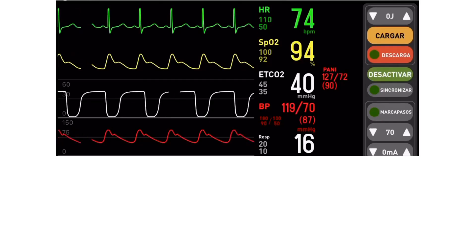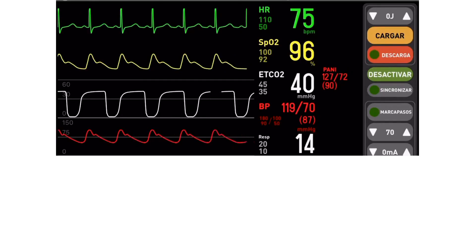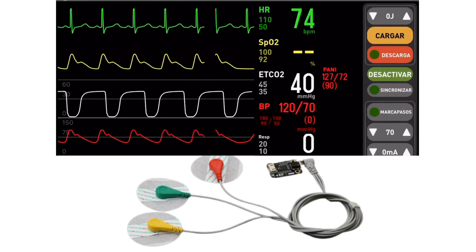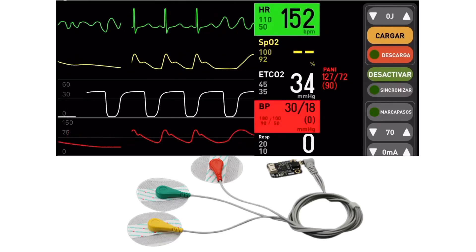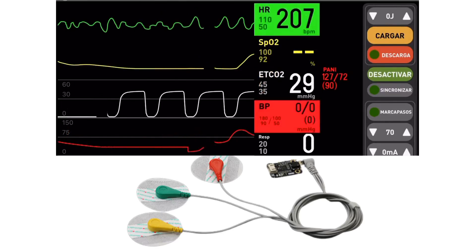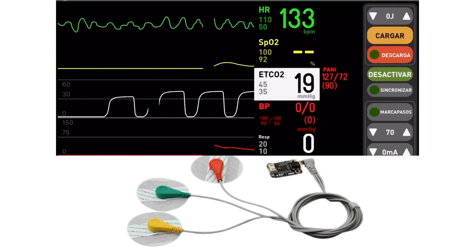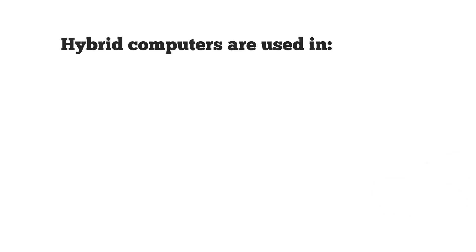An electrocardiogram, or ECG machine, is designed to measure heart activity. It uses sensors that pick up body signals and translate them into digital data. This digital data is processed by the controller and the output is generated, usually in the form of an electrocardiograph. Body signals are analog in nature, and the output is generated in both analog and digital form, making the ECG machine an example of a hybrid computer.